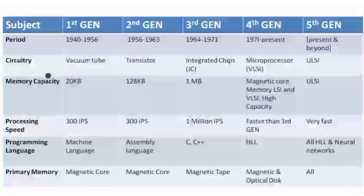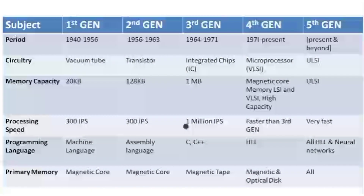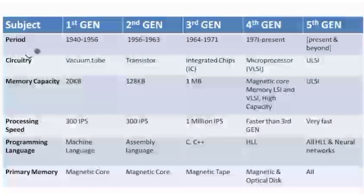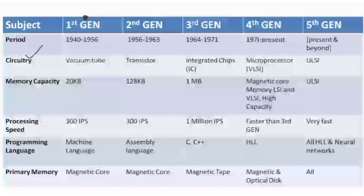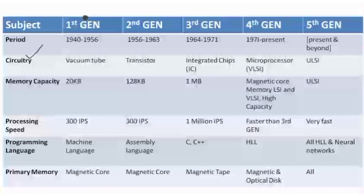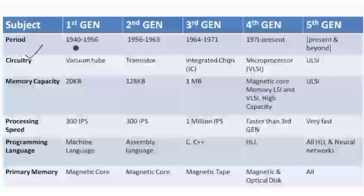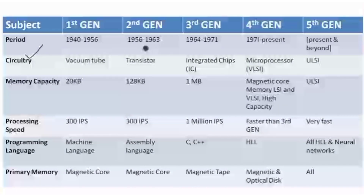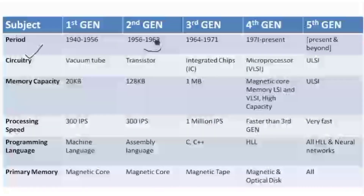These are the properties on whose basis we will differentiate the generations. The first property is period — the time duration when each generation occurred. In the first generation it is 1940 to 1956, in the second generation it is 1956 to 1963.